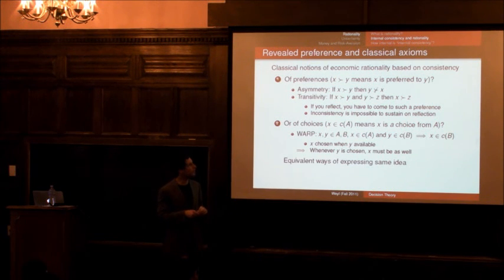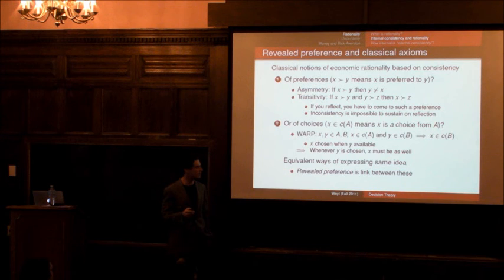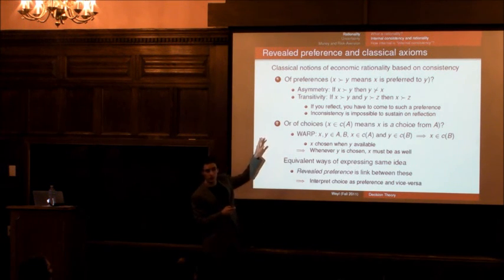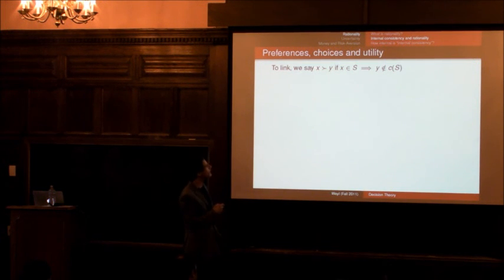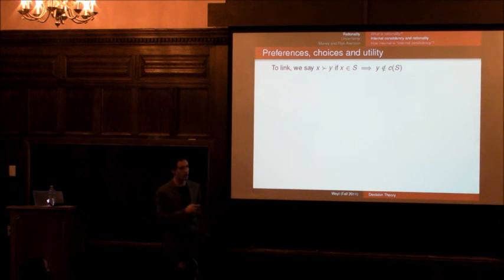Okay. These are both equivalent ways of expressing the exact same basic idea of preferences. And the notion of revealed preference is a link between these. Which is that we can always interpret choice behavior as preferences, and we can always interpret preferences as choice behavior. And to link this, we have to make a definition, which is that we say that x is strictly preferred over y, if y is never chosen from a set that contains x. That's the definition of x being strictly preferred to y. Okay.